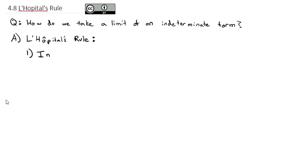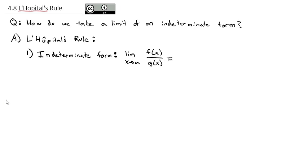Before we get into what the rule is, let's make sure we understand what an indeterminate form is. There are lots of indeterminate forms — these are things that are technically undefined, but we know that limits often exist at points that are undefined. One common indeterminate form is when the limit as x goes to some number a, or to infinity, of f(x) over g(x) reduces to 0 divided by 0. That is an indeterminate form — it doesn't necessarily mean the limit doesn't exist, but we need another strategy to solve it.